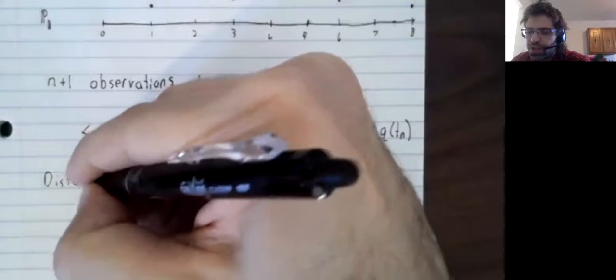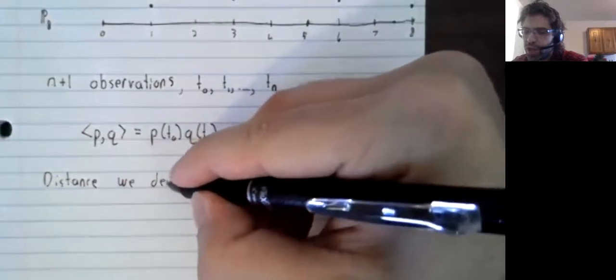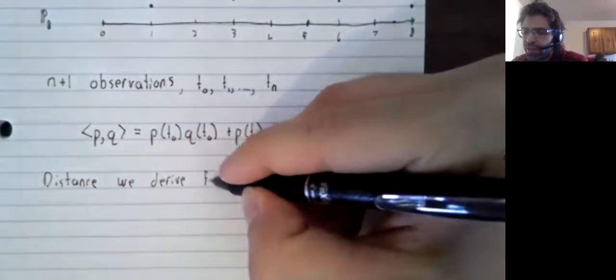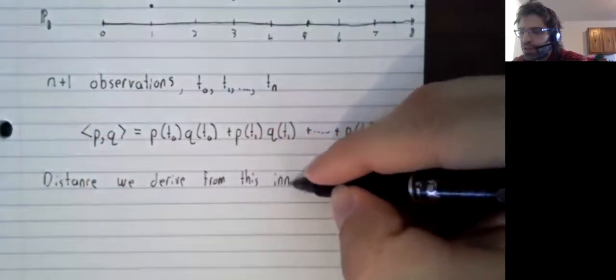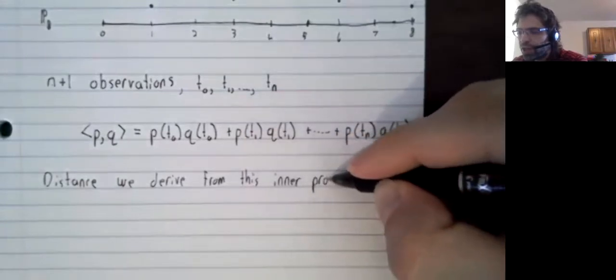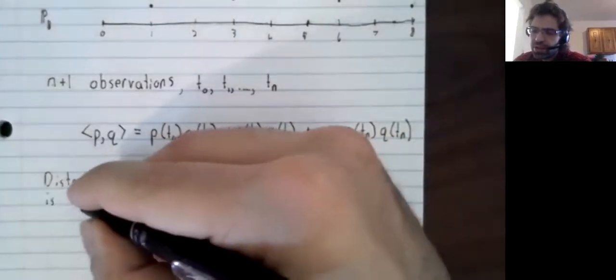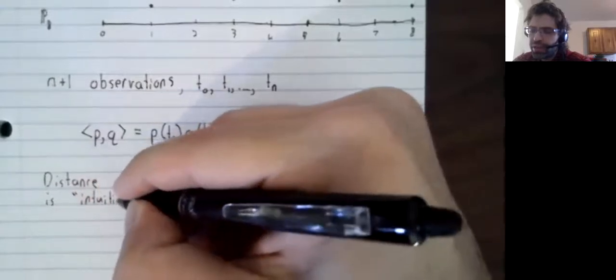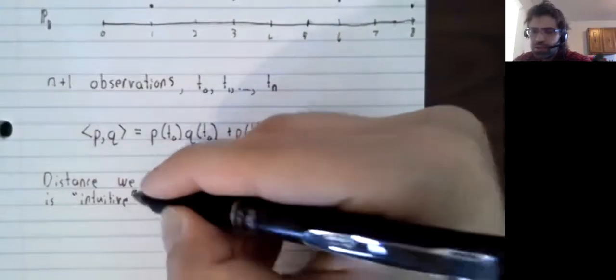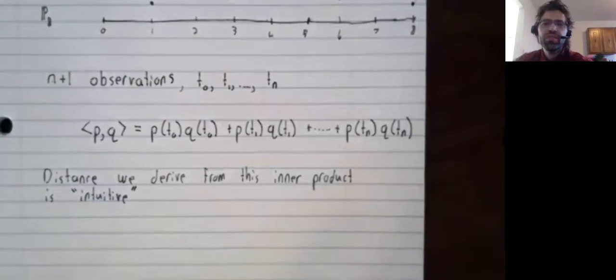The distance we derive from this inner product. So there are an infinite number of inner products and an infinite number of norms and an infinite number of distances,